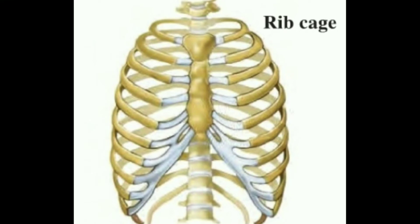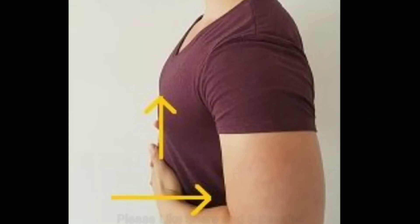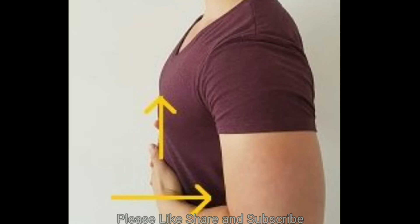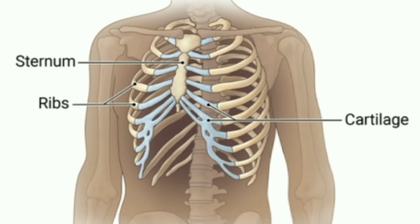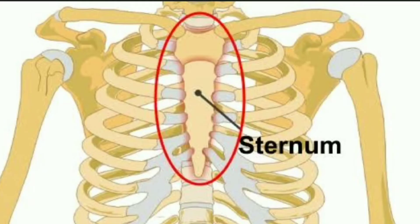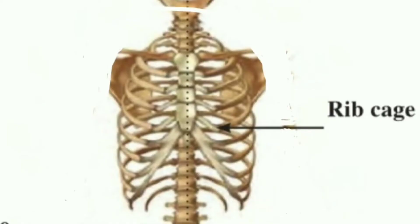Ribcage: Feel the left and right sides of your chest — how many bones can you feel altogether on the two sides? The cage-like structure in the chest is called the ribcage. In the chest, there is one vertical flat bone called the sternum. 12 pairs of flat bones called ribs are joined to it sideways. These 25 bones form the ribcage, and it is joined to the spine at the back.